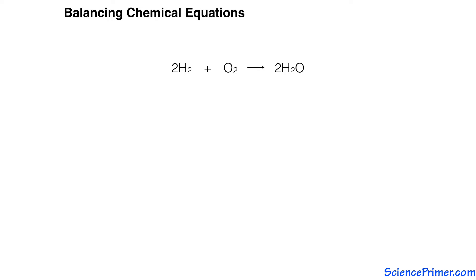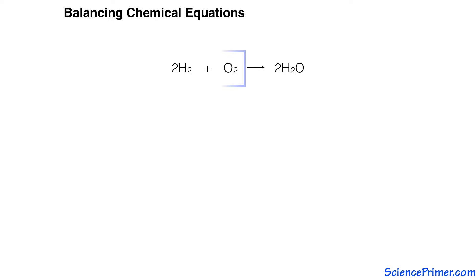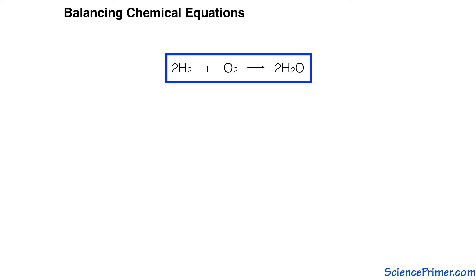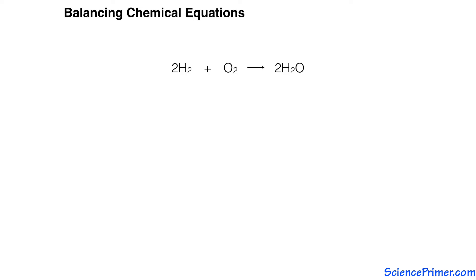In chemical reactions, sets of compounds interact with each other to form new compounds. Chemists use equations to describe these interactions. Like mathematical equations, chemical equations conform to a set of rules. This allows equations to provide detailed information about reactions.